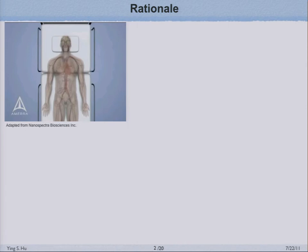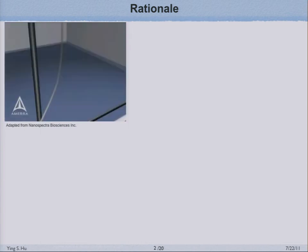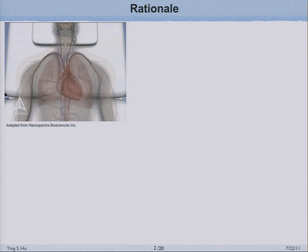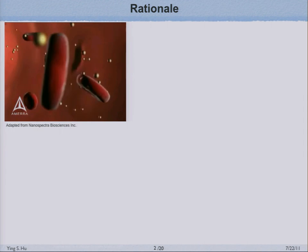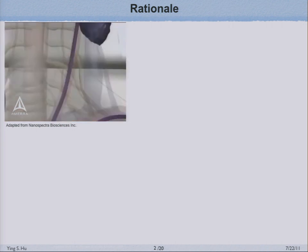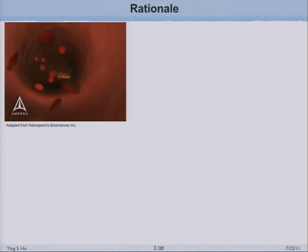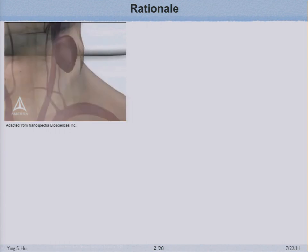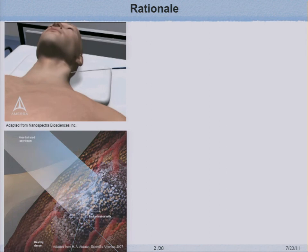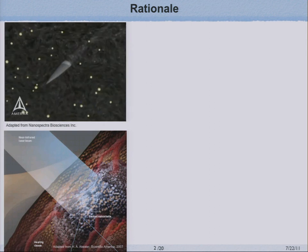I'd like to start by talking about the big picture as to why we're interested in gold-based nanoparticles. This video is made by Nanospectra, a startup company from Rice, commercializing the use of nanoshells for cancer treatment. The basic idea is we fabricate gold-based nanoshells that are biocompatible and have very strong absorption in the near-infrared range. We inject these nanoshells into a cancer patient; they circulate in the blood vessels, and because of the leaky nature of tumor vasculature, the particles accumulate on the tumor site. After the tumor is loaded with nanoparticles, we insert an optical fiber and deliver near-infrared light, which heats up the nanoparticles and kills the cancer cells without harming the surrounding healthy tissue.